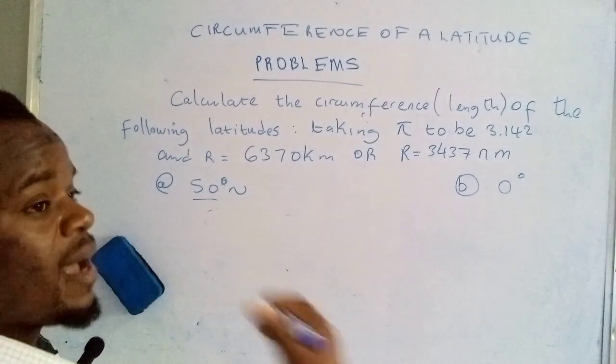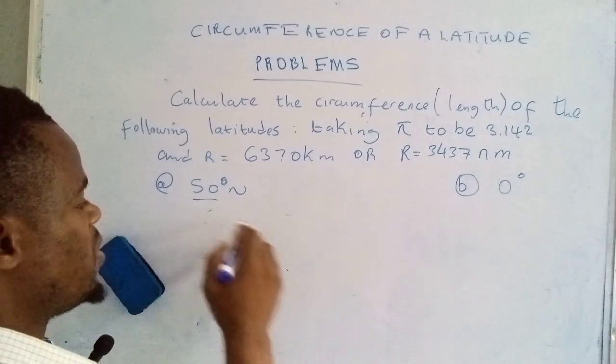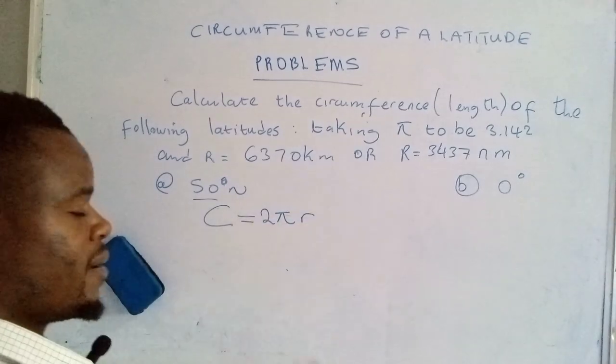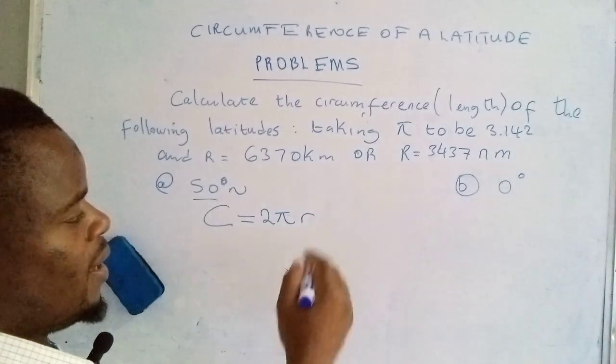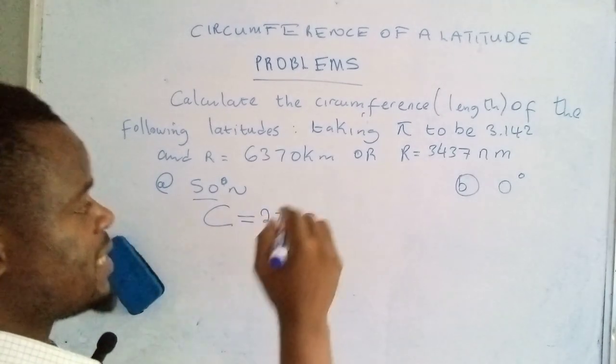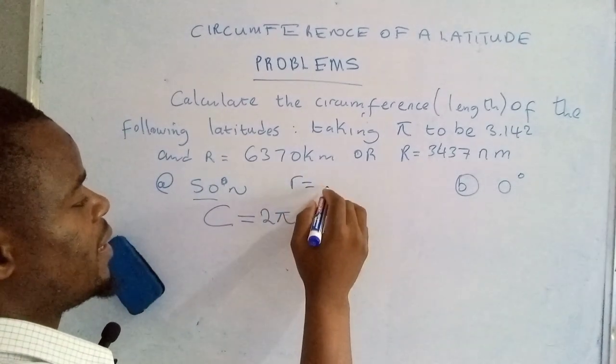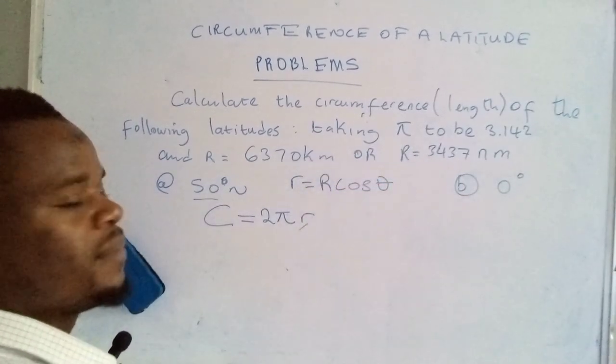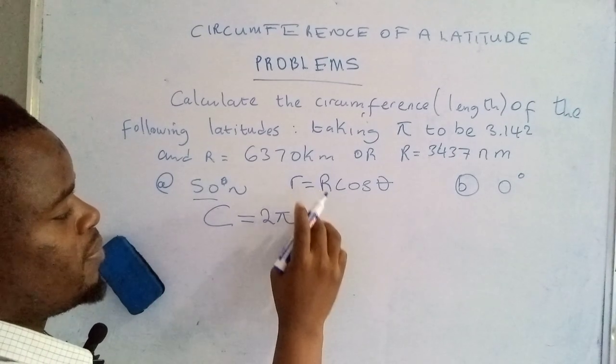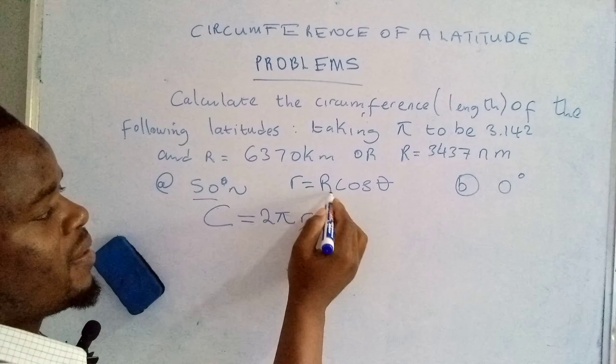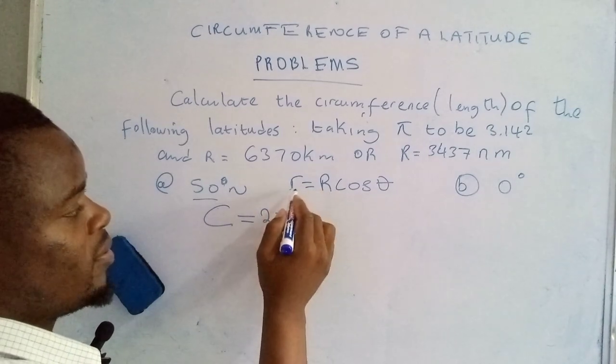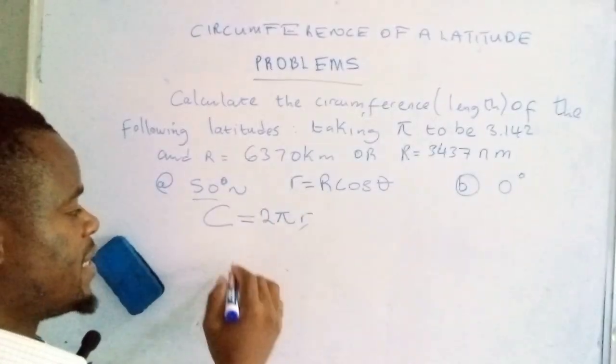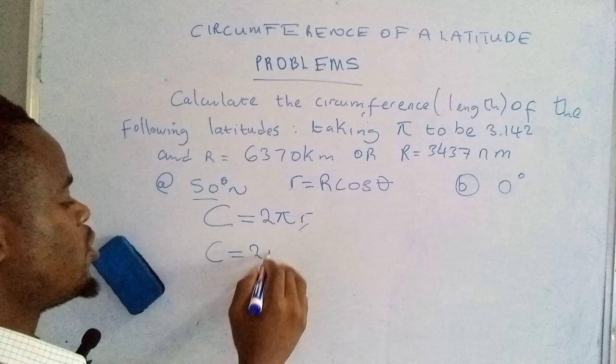To determine the circumference of any given latitude, we use the formula: circumference is equal to 2πr. But remember in the previous lesson we learned that the radius of a latitude is given by the radius of the earth cos θ. So now what I will do is I will actually replace this small letter r with the value of the small letter r, so that is the radius of the latitude. So circumference is equal to 2πr cos θ.